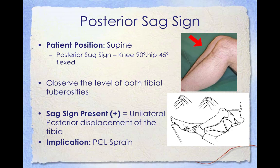A way to evaluate for a posterior cruciate ligament sprain is the posterior sag sign. The patient is positioned supine with the knee flexed to 90 degrees and the hip flexed to 45 degrees; then observe the level of both tibial tuberosities. If the tibial tuberosity sags posteriorly compared to the other side, the sag sign is positive, indicating unilateral posterior displacement of the tibia and a PCL sprain in that leg.